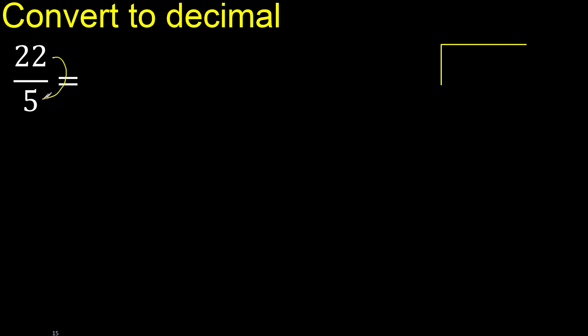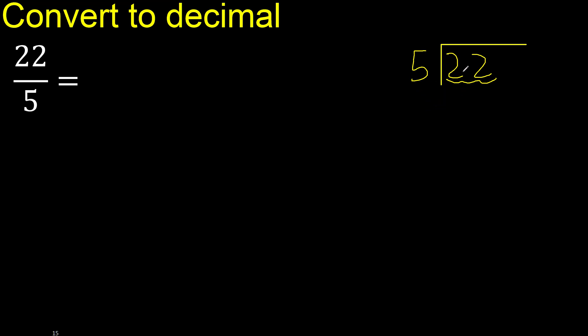22 divided by 5. 2 is less, therefore next, 2. 22 is not less, therefore with 22. 5 multiplied by which number is nearest to 22 but not greater?